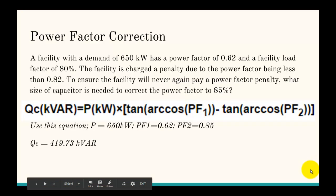So next, let's do a power factor correction problem. So, this is a facility with a demand of 650 kW has a power factor of 0.62 and a facility load factor of 80%. The facility is charged a penalty due to the power factor being less than 0.82. To ensure the facility will never again pay a power factor penalty, what size of a capacitor is needed to correct the power factor to 85%?